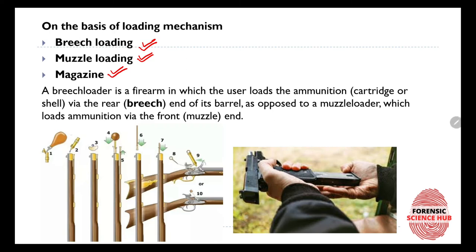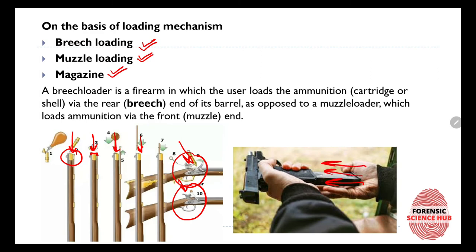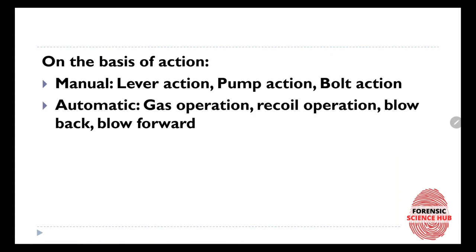To understand this, you need to know what the breech and muzzle ends are. The front end is the muzzle end, while the rear region is the breech end. If the projectile is loaded from the muzzle end, that is a muzzle-loading firearm; if loaded from the breech end, that is a breech-loading firearm; and if loaded with the help of a magazine, that is magazine-loaded.